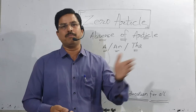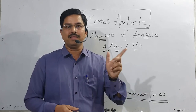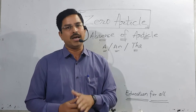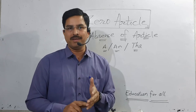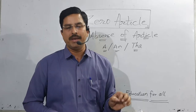For example: 'I met a man' — particular; 'The man in that party' — particular. Those take articles. But in examples like: 'Man is mortal' — broad sense, no article. 'We have to work hard for mankind' — broad sense, no article. So both 'man' and 'mankind' here take no article.